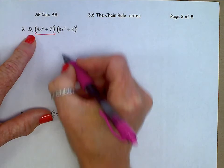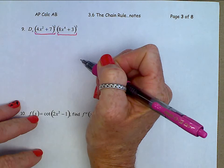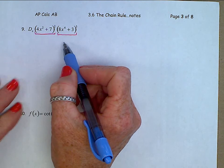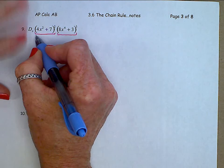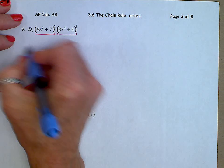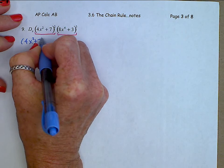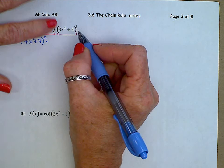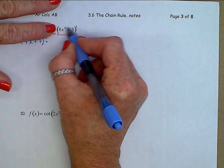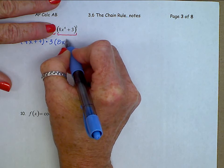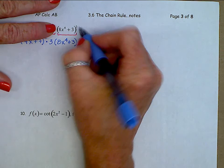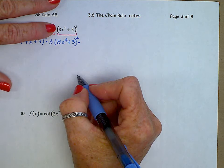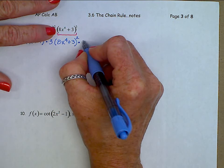There's the first function, there's the second function. Within each of those there will be a chain rule when we take its derivative. So let's start. First function: (4X squared plus 7) squared, times the derivative of the second. That 3 is coming down in front, inside stays the same to the squared, decrease that power by 1. Then times the derivative of its inside, which is 32X cubed.